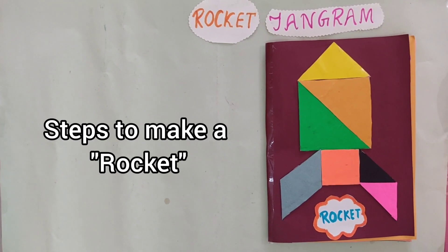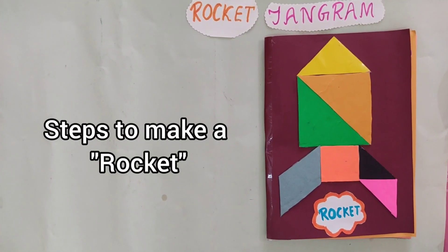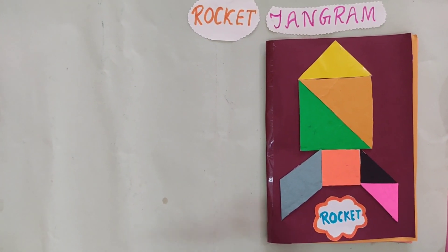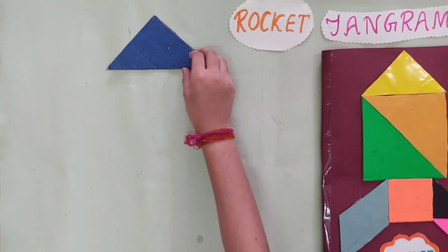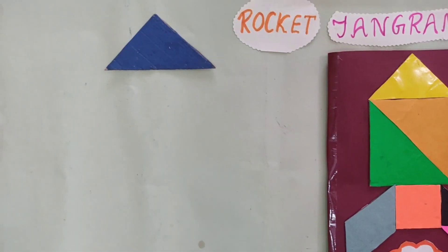The man is ready to run. Steps to make a rocket. First we take the medium sized triangle and place like this.